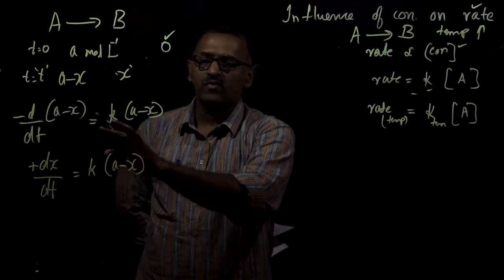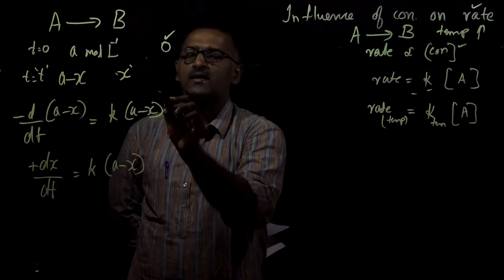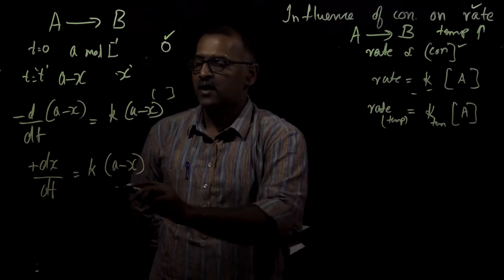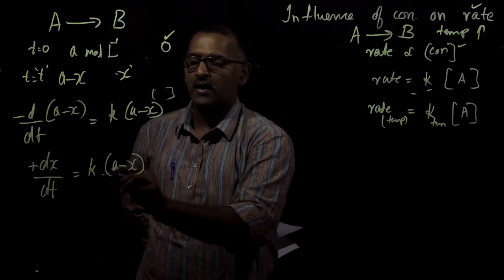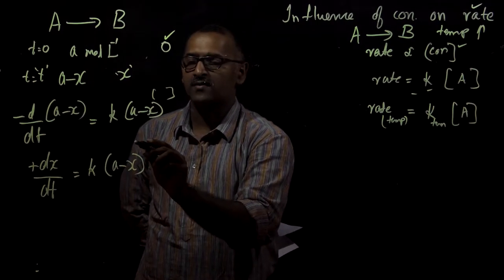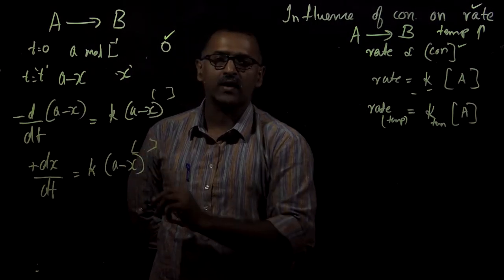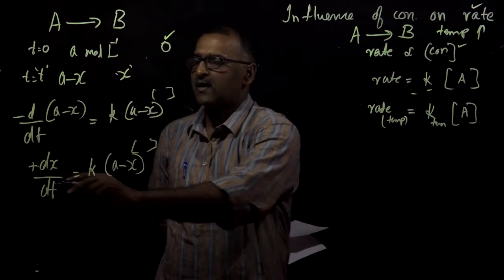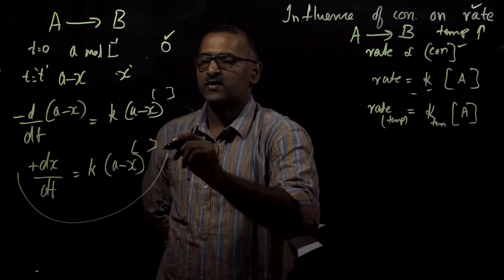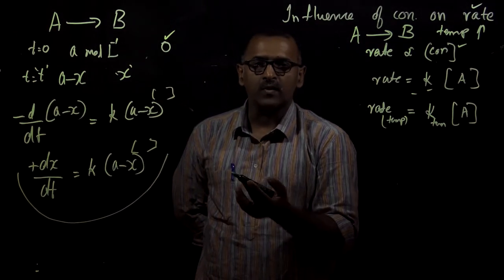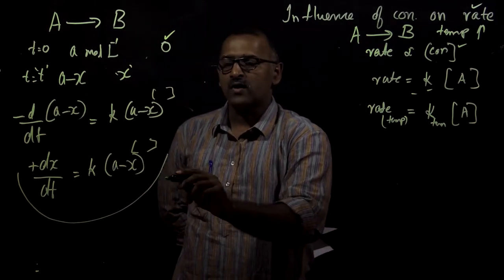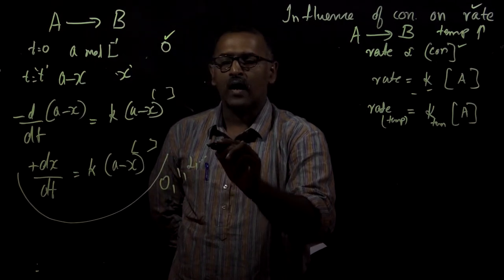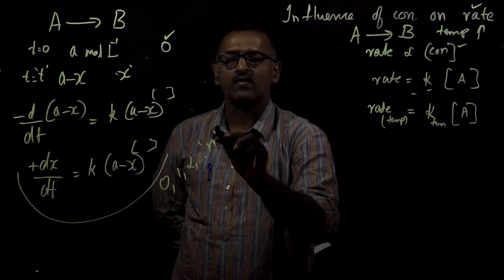This applies to a first order reaction. For a reaction of any order, there will be a power — that will be the order of the reaction. So dx/dt equals K into (A minus X) to the power of some exponent, and that exponent will be our order of the reaction. By integrating this rate expression, we can find the integrated rate constants for different orders: 0, 1, 2, or up to nth order.